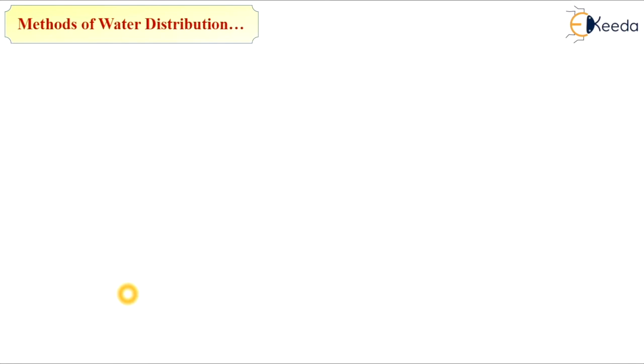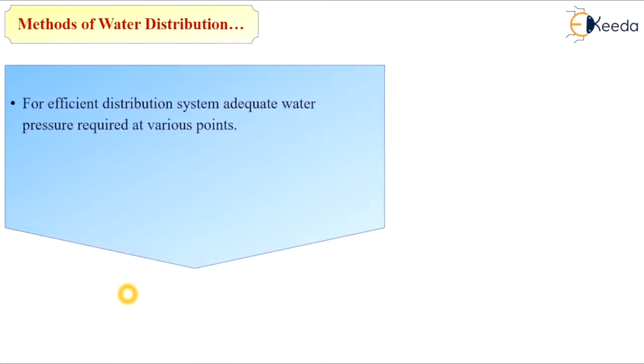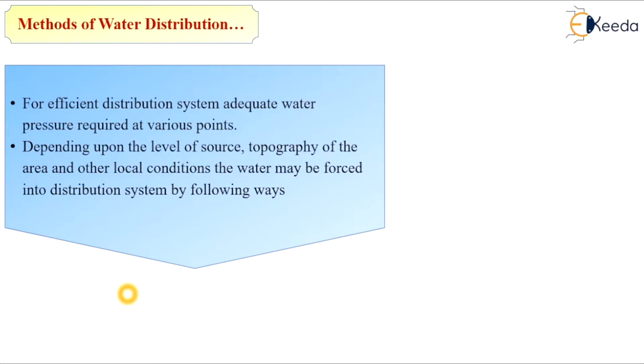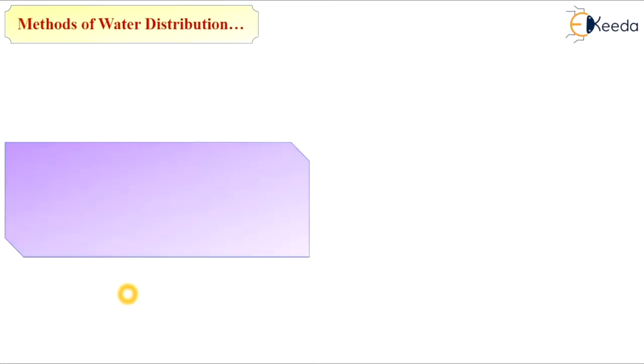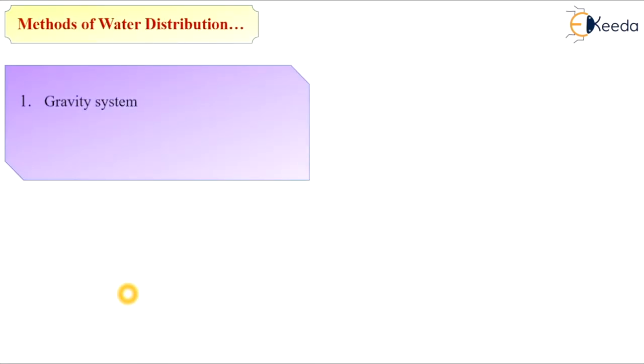In the previous slides, we have seen the layouts of distribution systems — that is, the dead-end system, radial system, Grid Iron system, and ring system. Next are the methods of water distribution. Layout means the pattern of the distribution system, while the method of distribution means through which method we are providing or distributing the treated water to the whole city. For an efficient distribution system, adequate water pressure is required at various points. Depending upon the level of sources, topography of the area, and other local conditions, the water may be forced into the distribution system by the following methods: the gravity system, the pumping system, and the combined gravity and pumping system.